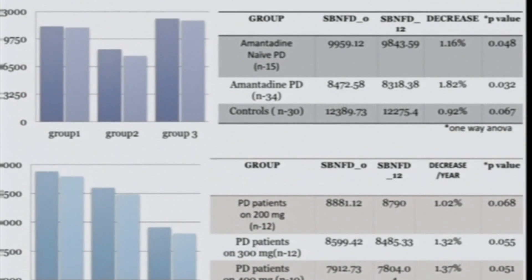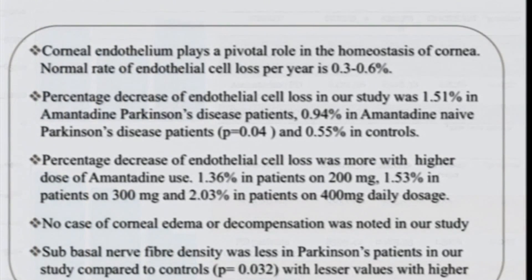Subbasal nerve fiber density was also found to be decreased more in Parkinson's disease patients on amantadine, with 1.82% decrease in amantadine patients, and those on increased dosage had greater decrease of subbasal nerve fiber density.